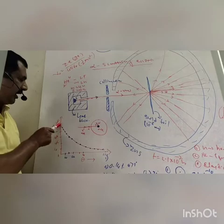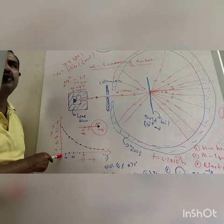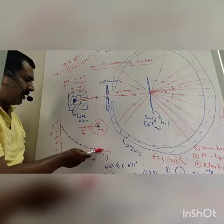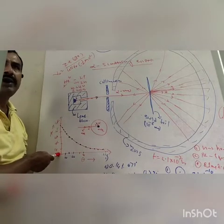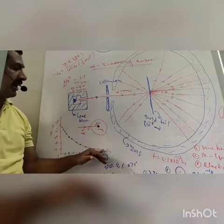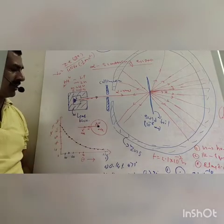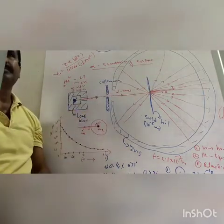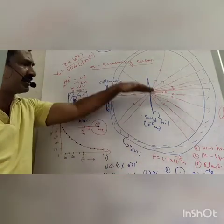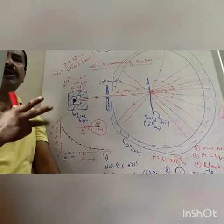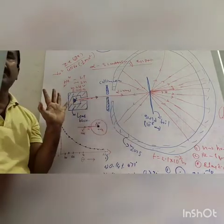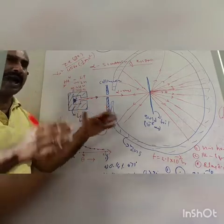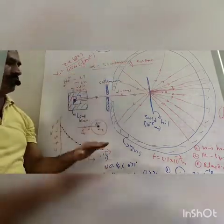From the graph, nearly 10 to the power 7 alpha particles pass at angle 0 — that is, straight through. At nearly 180 degrees, the number is very small. The first conclusion is that most of the alpha particles pass straight — there is no collision with the nucleus or the atoms of the gold foil. Those alpha particles that pass straight are not deflected at all.